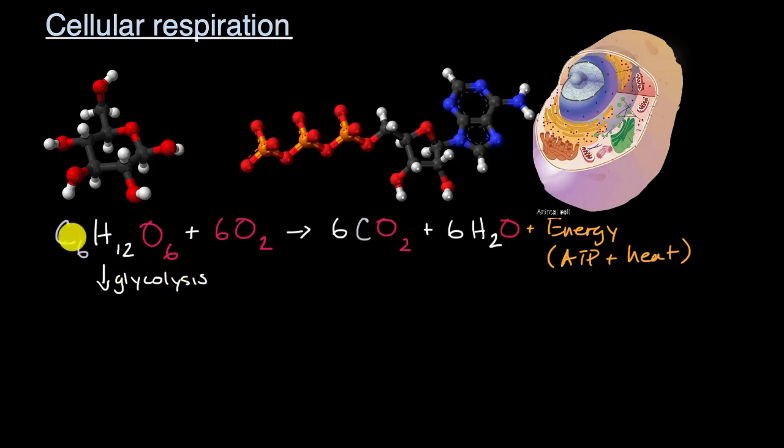And what it does is, it breaks each glucose molecule into two molecules known as pyruvate. Now just that process alone, and we'll go into much more depth in other videos, does start to produce some ATPs.